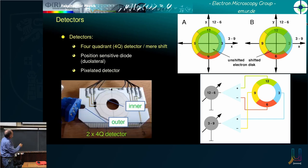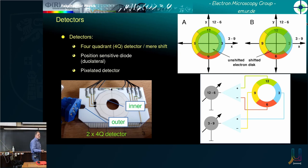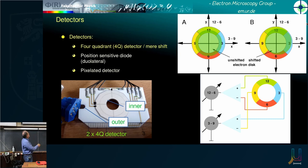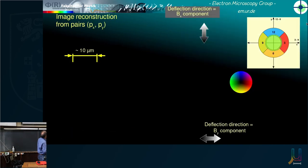This is our four-quadrant detector — a blown-up image showing an inner ring divided into four sectors and an outer ring, which is handy if you want to modify the camera length or if the interaction strength changes. If the interaction is larger, use the outer ring; if weaker, use the inner ring.